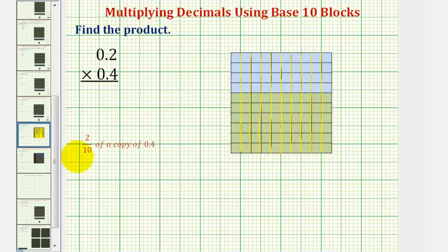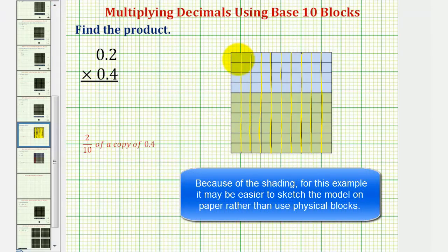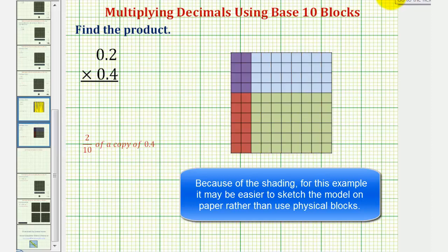Again, because we want 2 tenths of 4 tenths, our product would be two of these 10 partitions. We could just shade two partitions of the 4 tenths, but let's go ahead and shade two partitions of the entire flat. If we do it this way, the double shaded region represents our product.